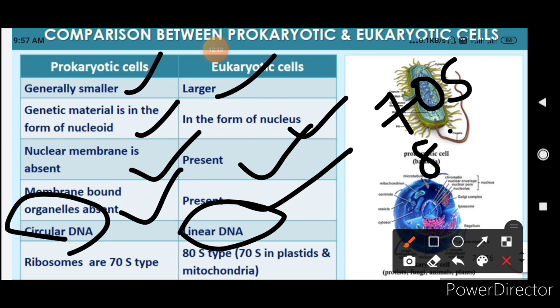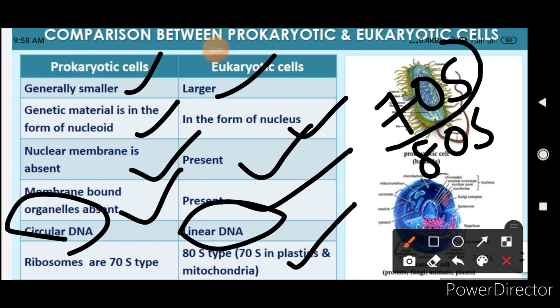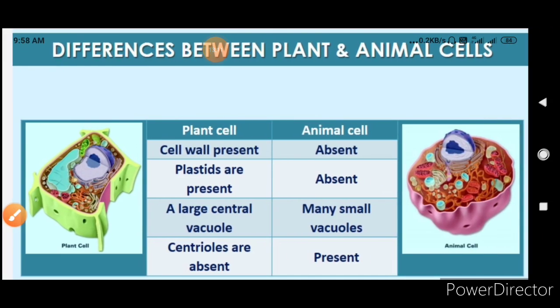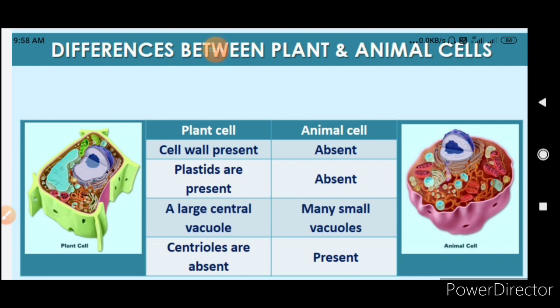Eukaryotic cells generally have 80S ribosomes, but plastids and mitochondria have 70S ribosomes — the same type as in prokaryotes. The 'S' stands for the sedimentation coefficient. This is because plastids and mitochondria have their own genetic material and are capable of making their own proteins to some extent.